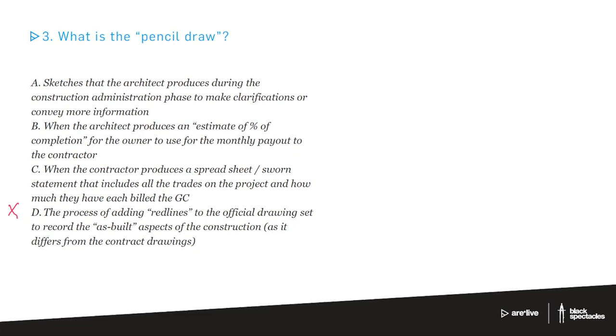Similarly, A is also sketches. The pencil draw is actually not about sketches or drawing at all. So I'm going to take A out. So then the question is, is it B or C? And you can actually figure this out pretty fast when you look at B and you say when the architect produces an estimate of percent of completion? In general, the architect doesn't do that. The only time an architect would be if there's a conflict or a change order going on, something where there's a discussion happening. But essentially, the schedule, the percent of completion, the means and methods, that's all part of the GC's world.